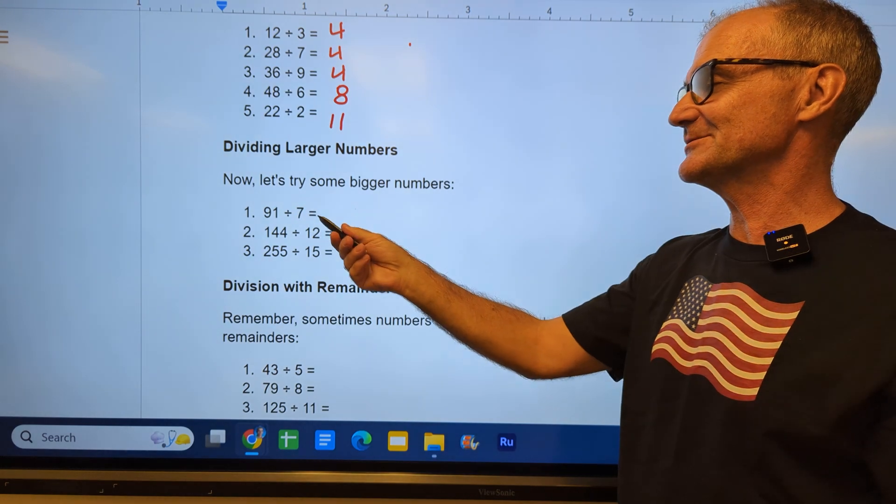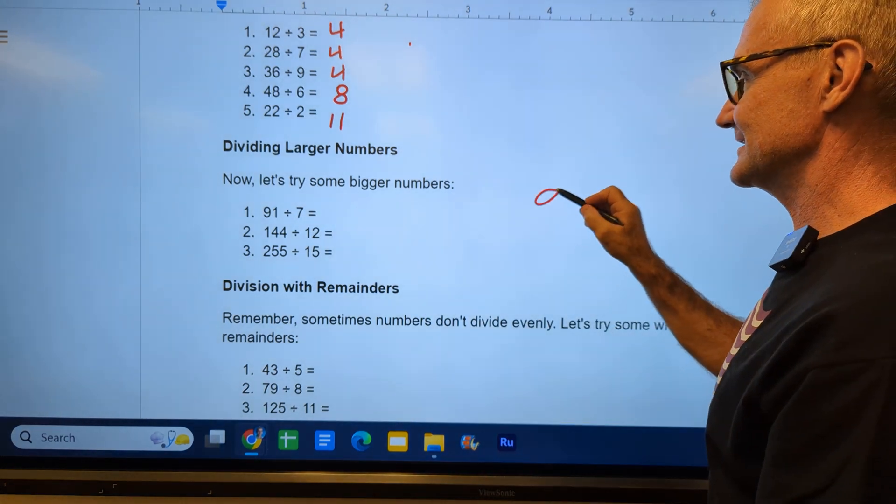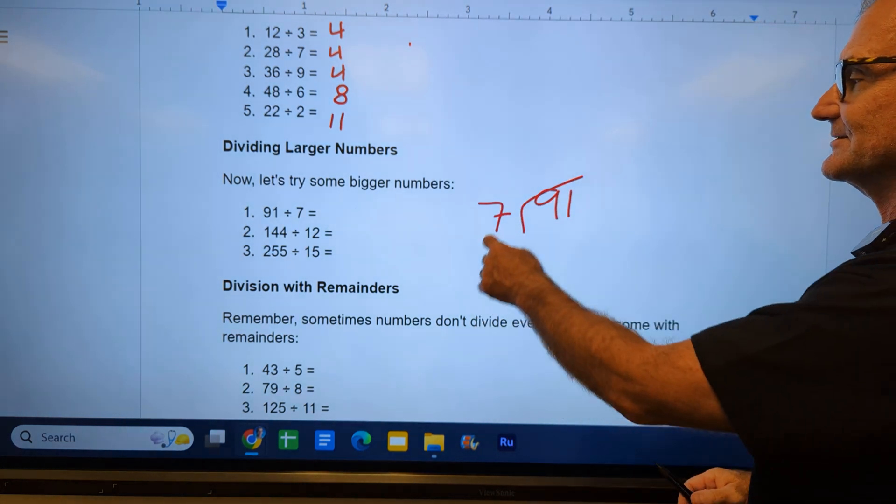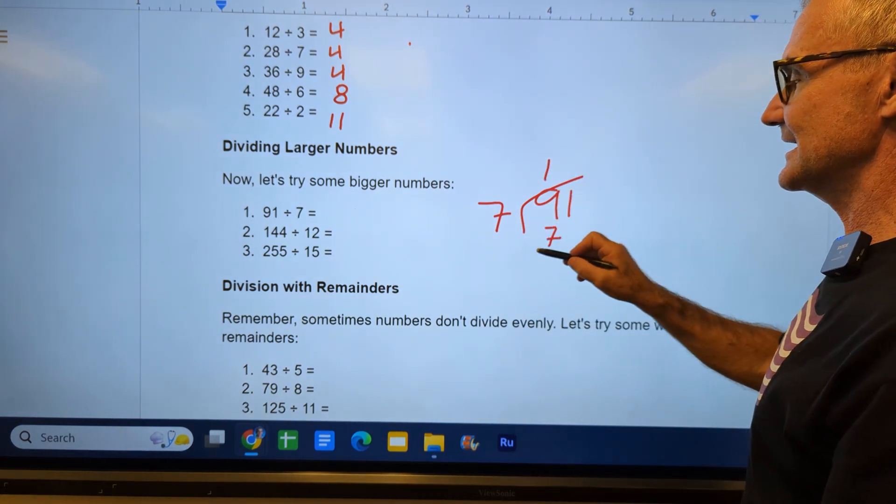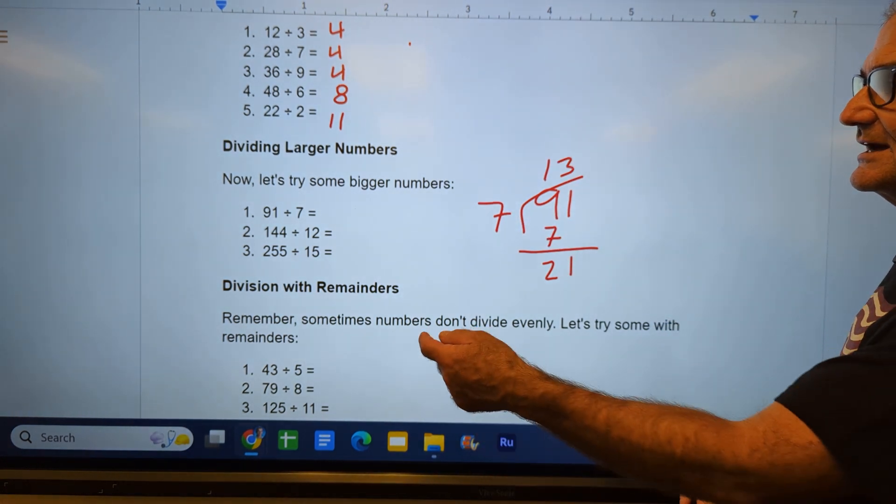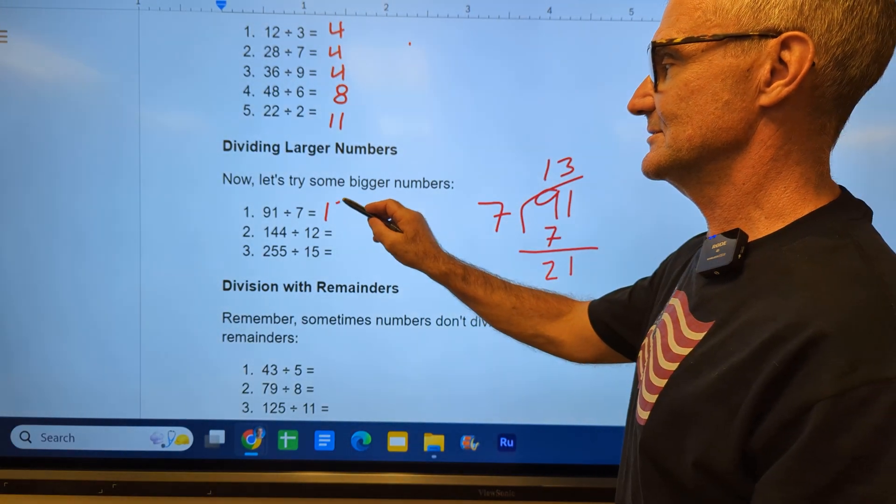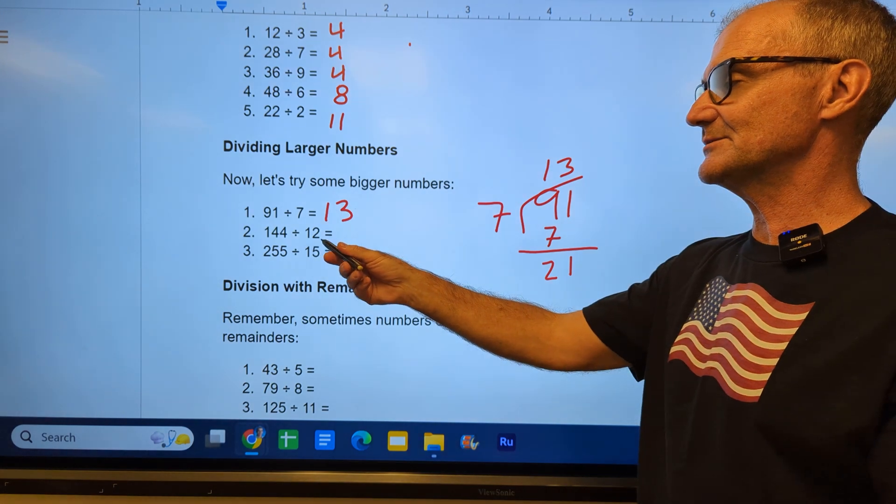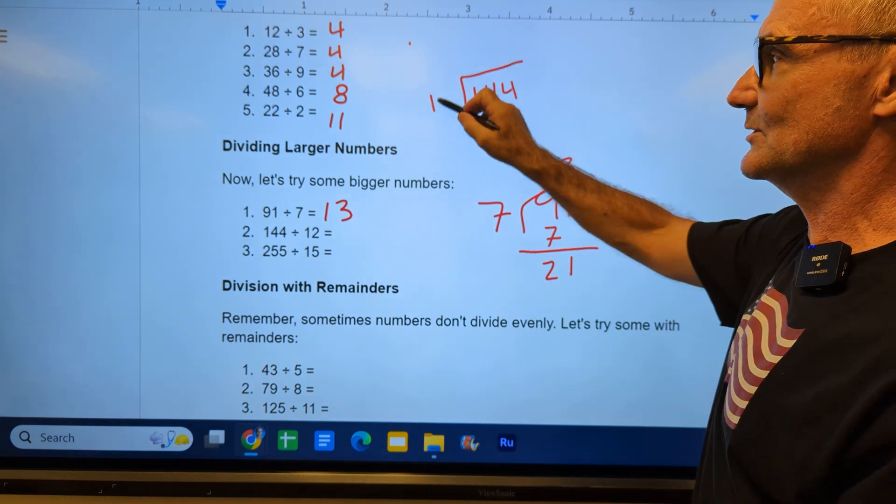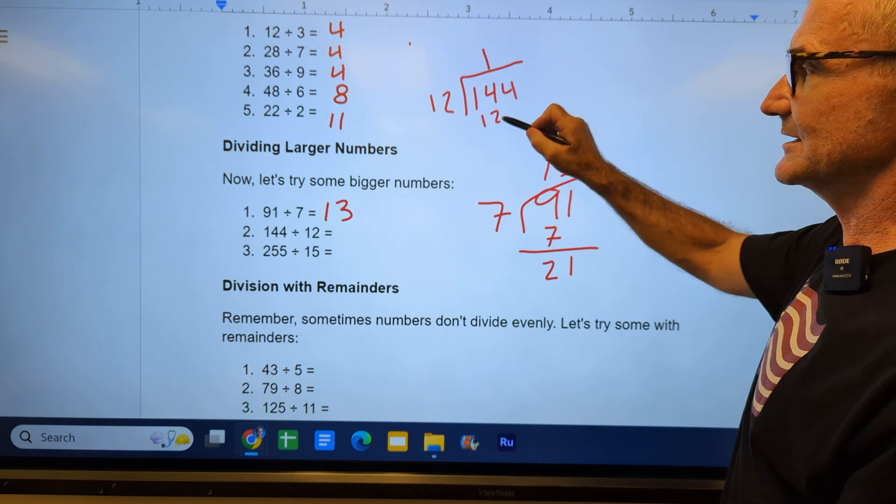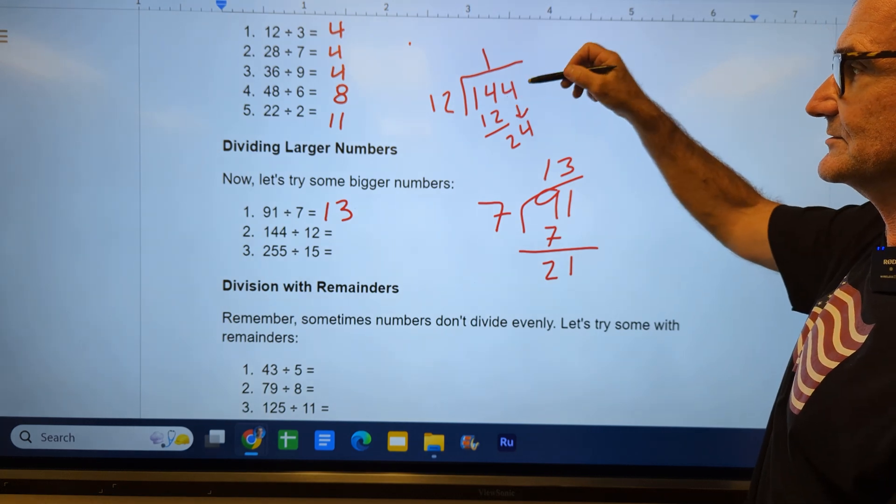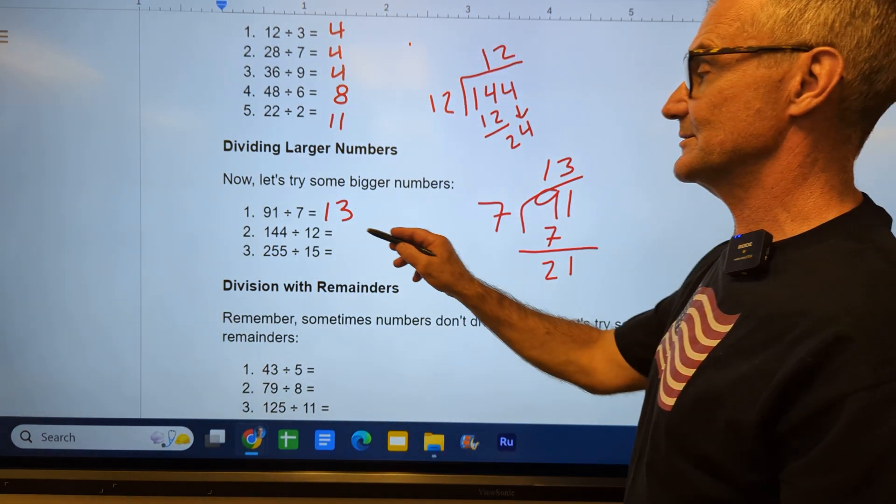Alright, here are some longer ones right here: 91 divided by 7. If I can't do that in my head, I just write it out this way. 7 goes into 9 one time. I put the 7 below it. 9 minus 7 is 2. Bring down the 1. 7 goes into 21 three times. So 91 divided by 7 is equal to 13. 144 divided by 12. 12 goes into 14 one time. I write it below, I subtract. 4 minus 2 is 2. Bring down this 4. 12 goes into 24 two times. So 144 divided by 12 is 12.